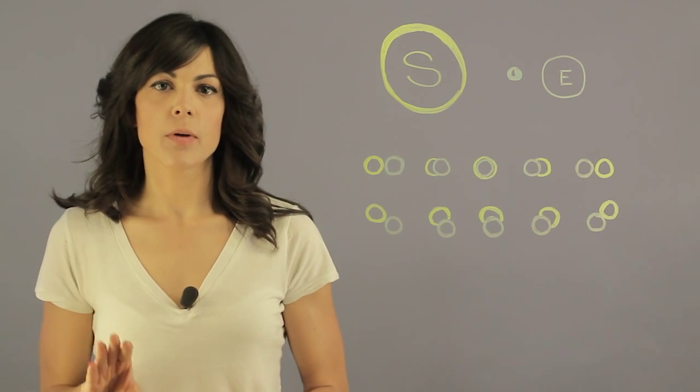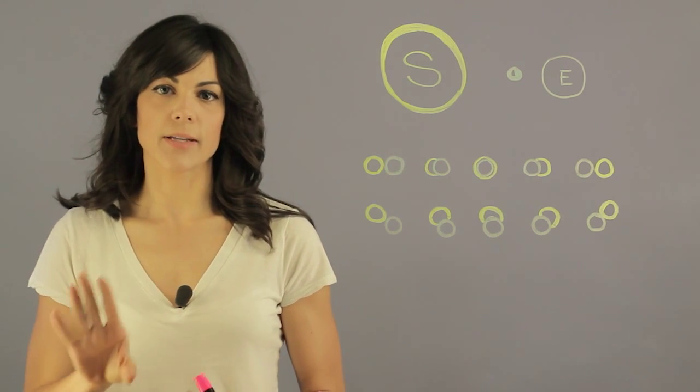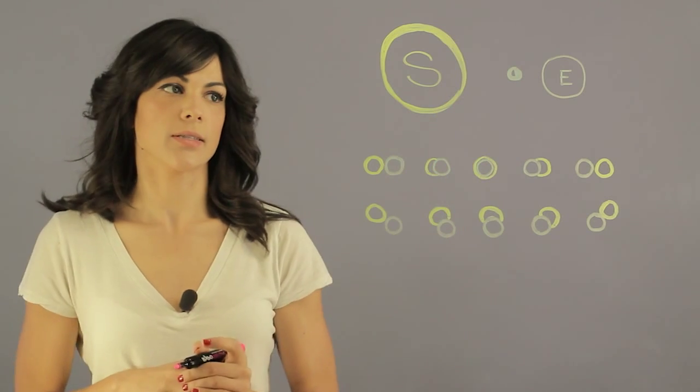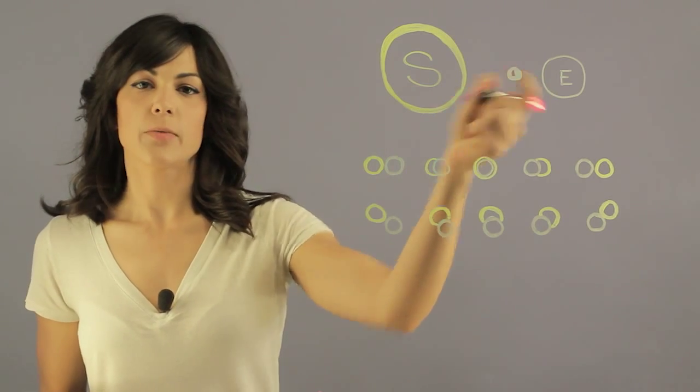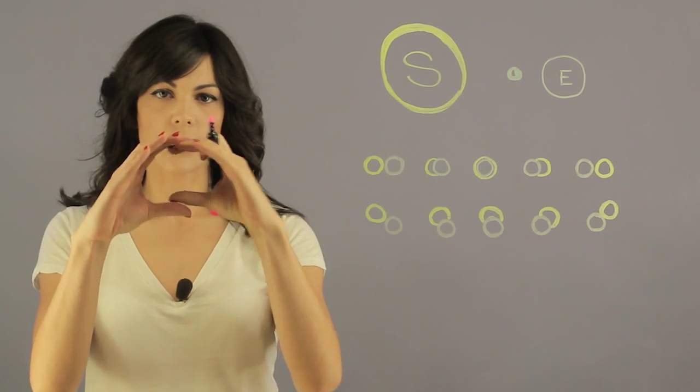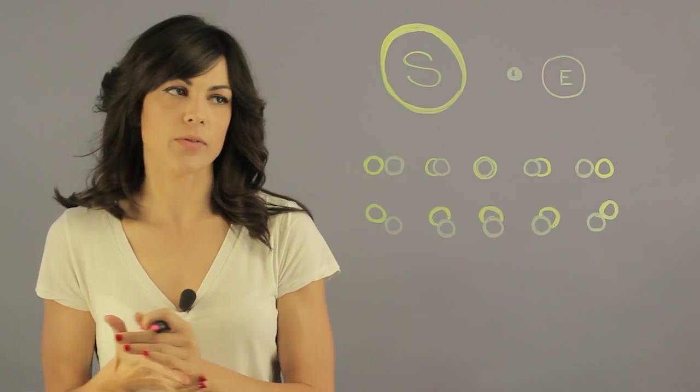So a solar eclipse is when the Moon comes between the Earth and the Sun. So it will be a position like this. So instead of being able to see the Sun, you see the shadow of the Moon moving in front of the Sun.